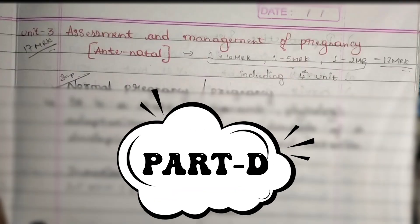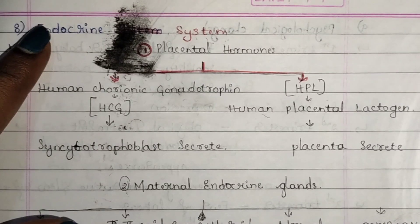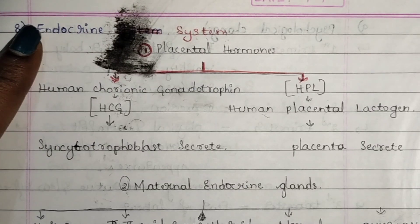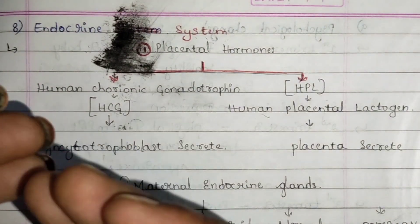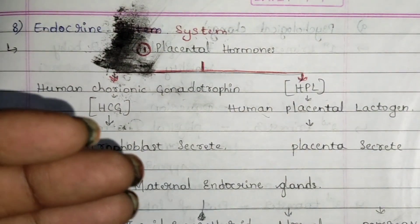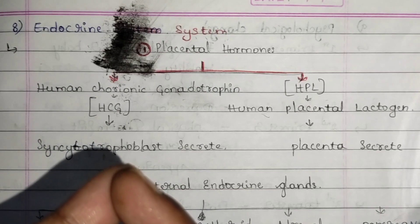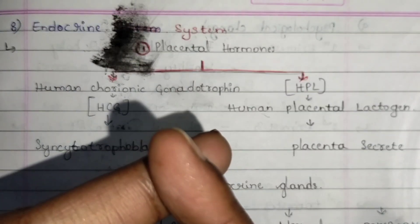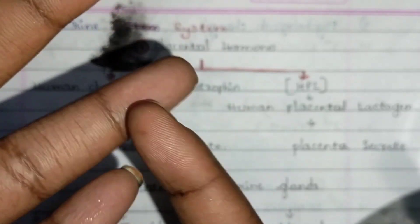Hello guys, this is Unit 3 Part D — the Endocrine System. In the endocrine system, there are three types of hormones that are produced: one is placental hormone, another is maternal endocrine glands, and the other is steroidal hormone.